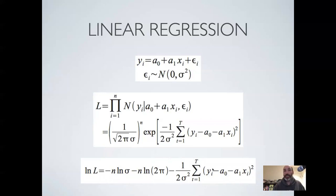Now we've got a log-likelihood similar to what we've seen before. Our next step is to take the derivative, set it equal to zero, and solve. But we have an obvious problem: we now have three parameters. You could start with any of the three — the intercept, slope, or standard deviation — and I'm going to start conveniently with the intercept.